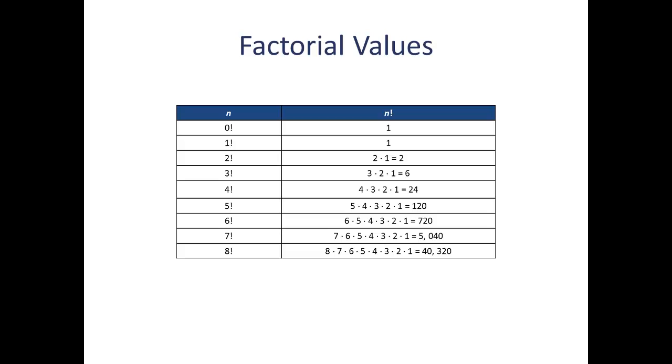Now, this table shows the numeric values for the first 9 factorials, 0 factorial up to 8 factorial. So you can see, 5 factorial is equal to 120, 8 factorial is equal to 40,320.